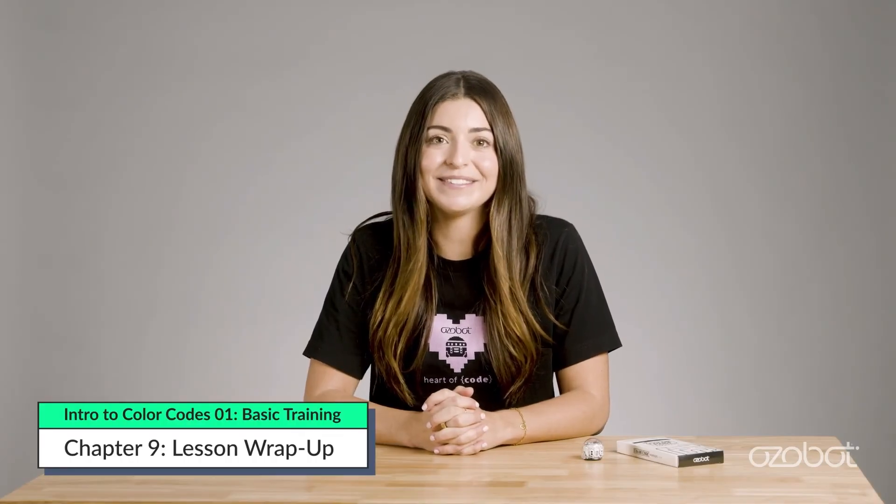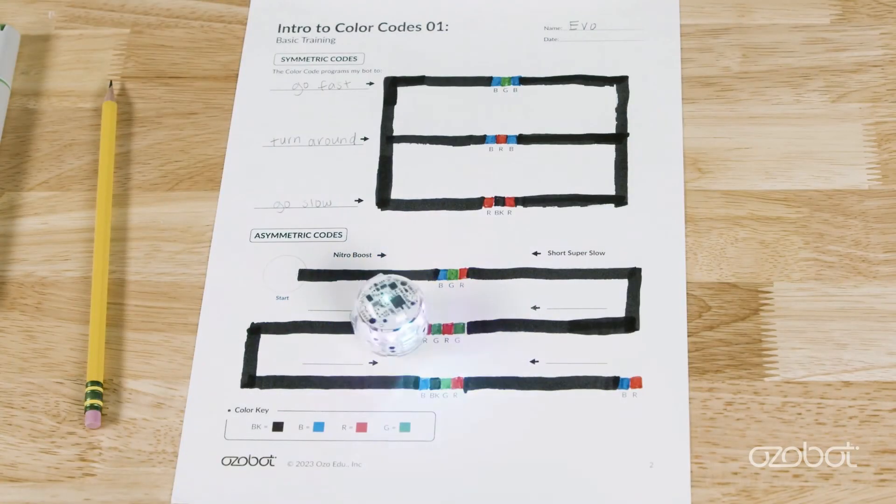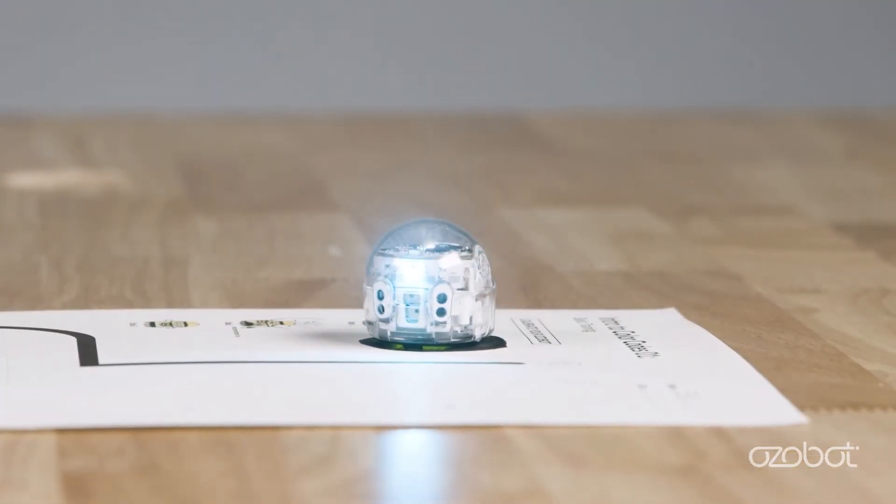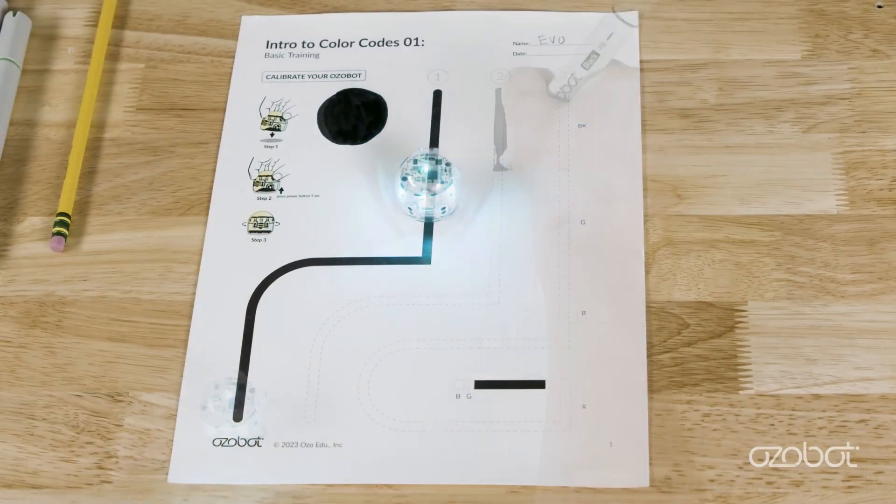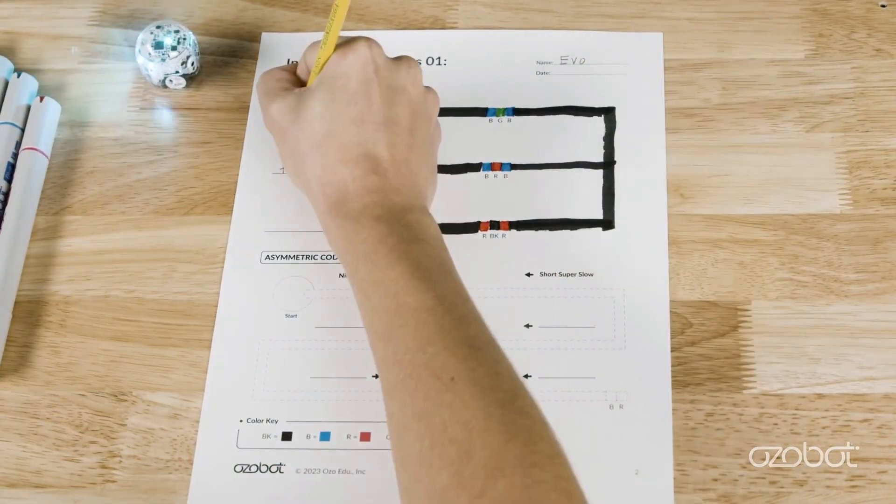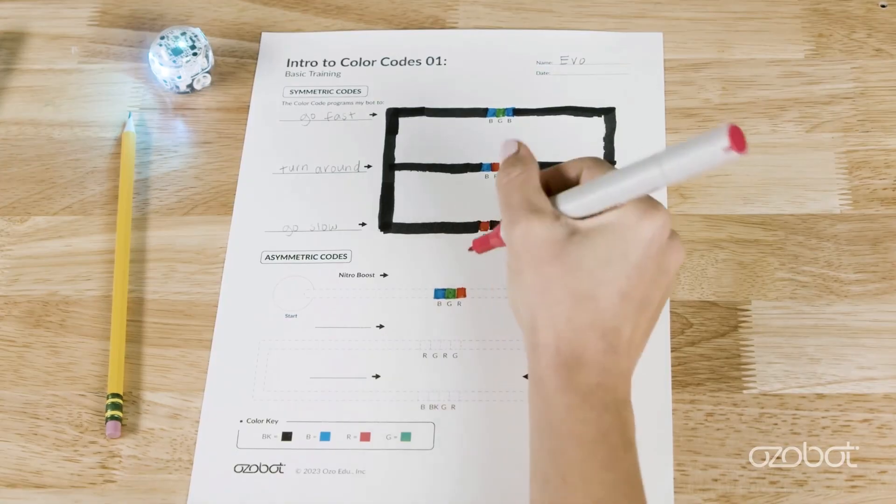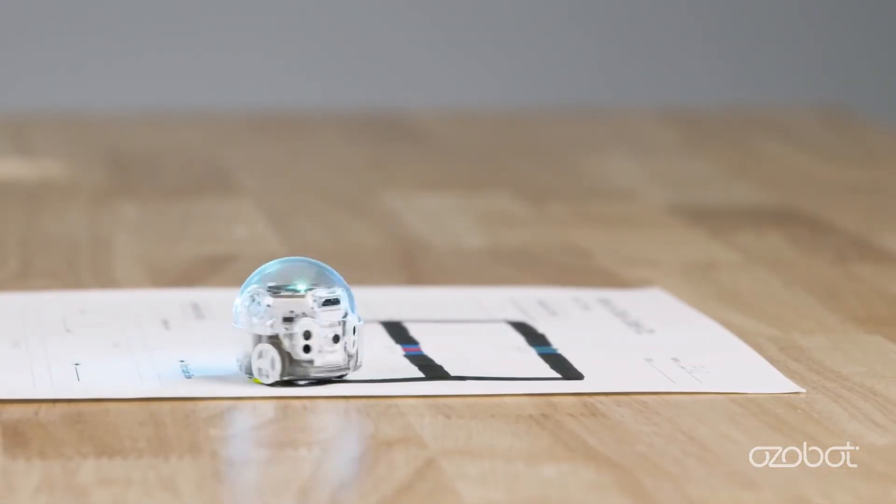You have programmed your Ozobot for the first time with color code. You're a robot programmer. Make sure you have completed this lesson by answering these questions. What is a color code? Did you fill in the black dot and calibrate your bot successfully? Did you complete the lines from start one, start two, and start three? Did you fill in the symmetric codes and write the bot's actions on the blank? Did you fill in the asymmetric codes and notice the different actions of your bot?